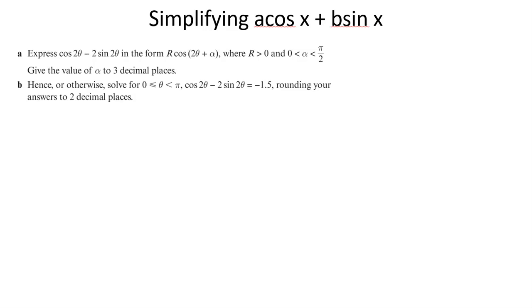Let's have a go at an example. Here we have cos(2θ) minus 2sin(2θ). Give it in the form R*cos(2θ + α), R greater than 0, α between 0 and π/2, which is a cute angle. I'm not concerned about the 2θ because it's in both places.